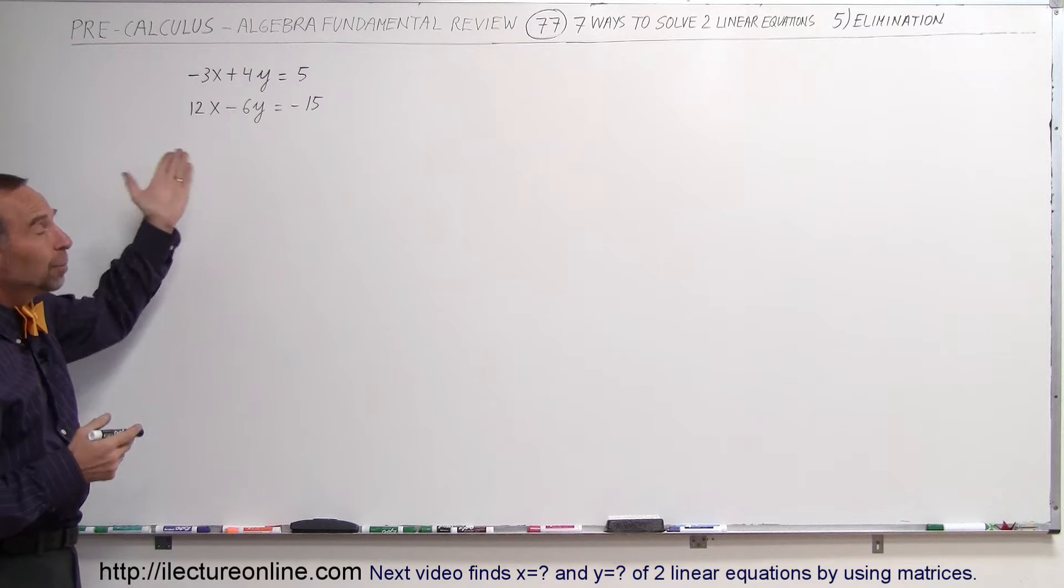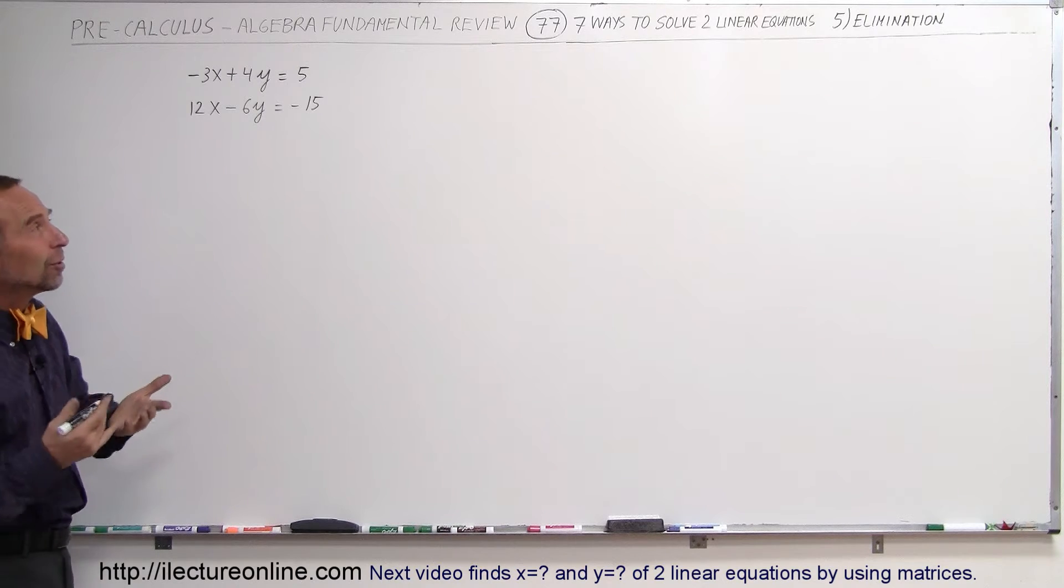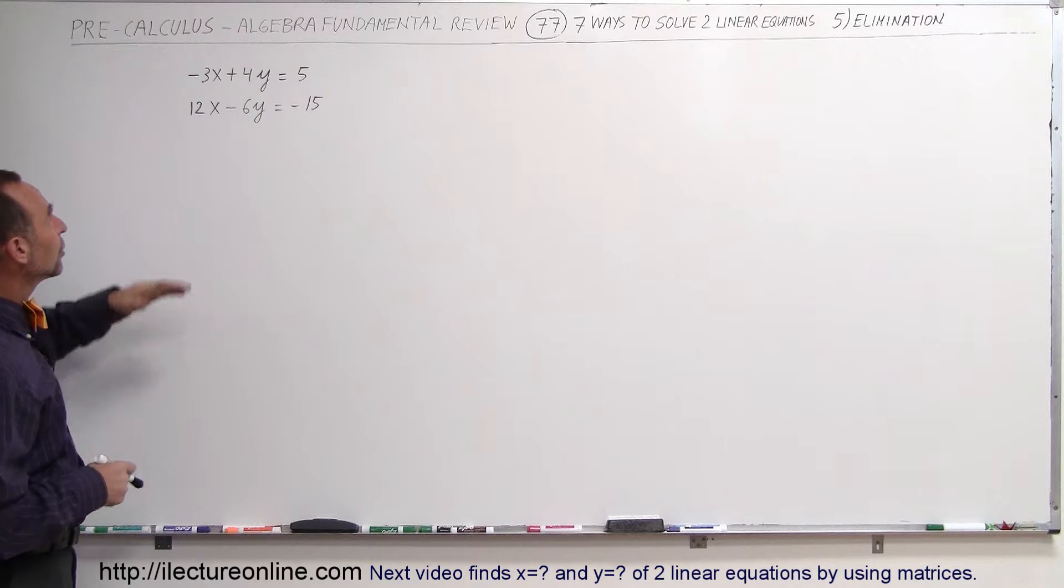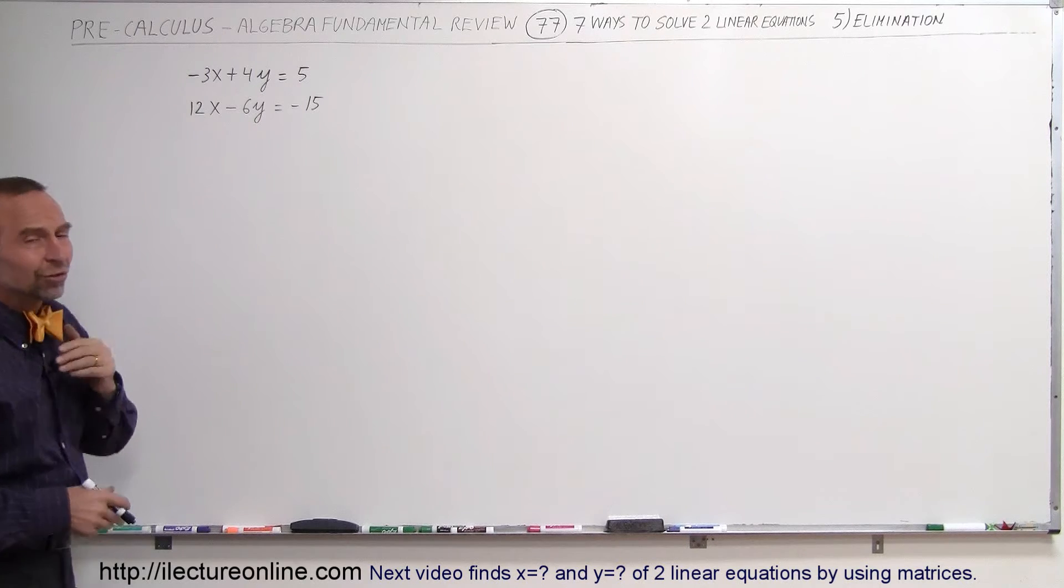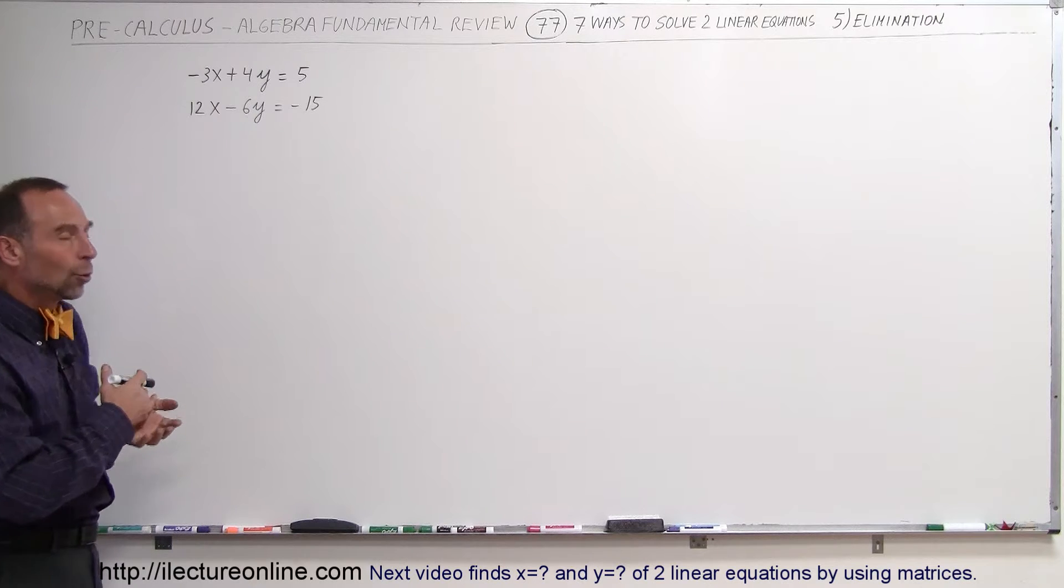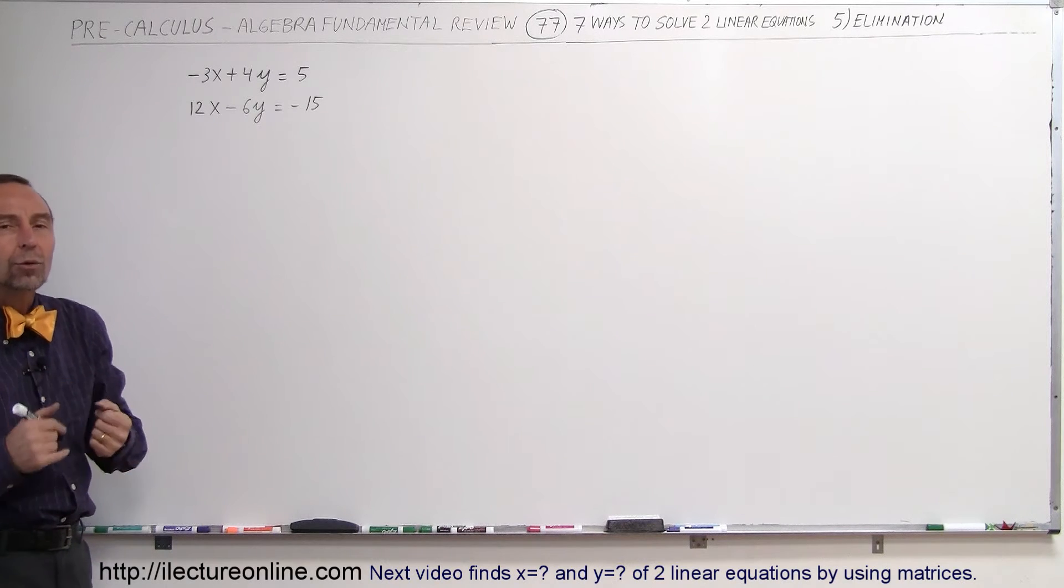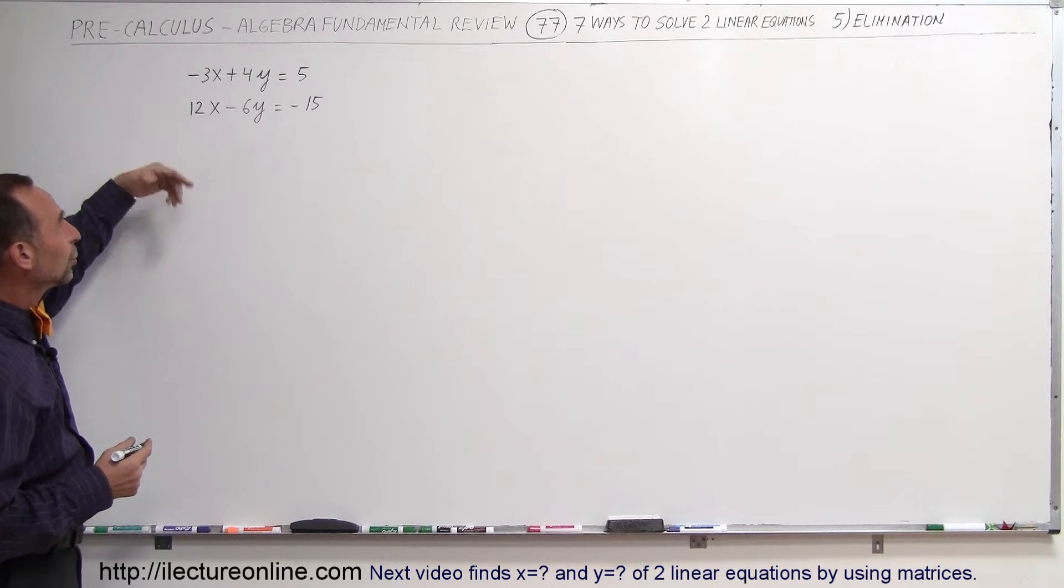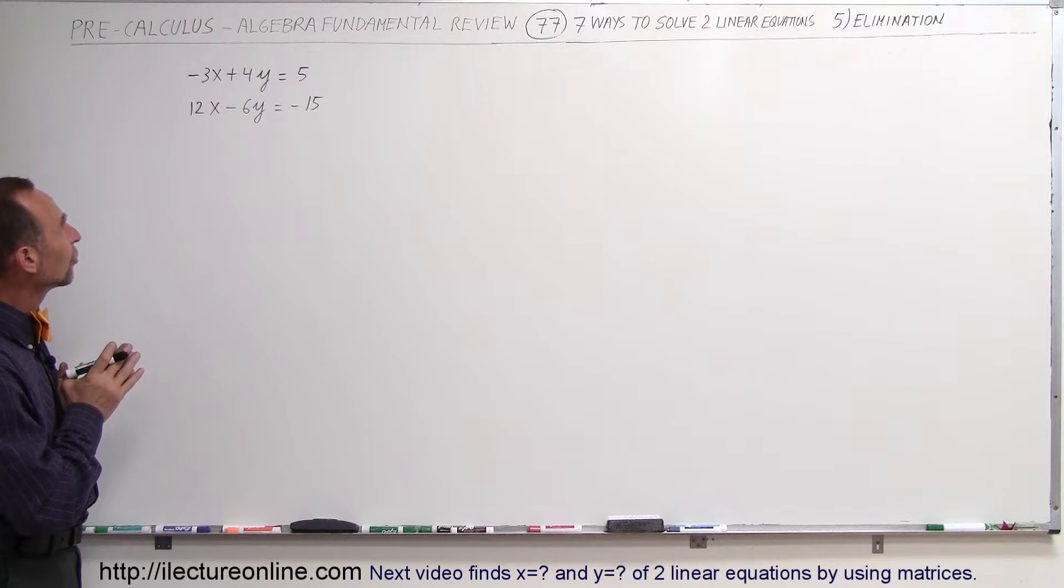Also, when they're written in this particular fashion, using the method of elimination is usually a handy way to do the problem. What you're trying to do is you're trying to eliminate one of the variables. You're trying to eliminate the x or the y by subtracting one equation from the other if possible. But since subtracting one equation from the other will not eliminate one of the variables, you need to do something first.